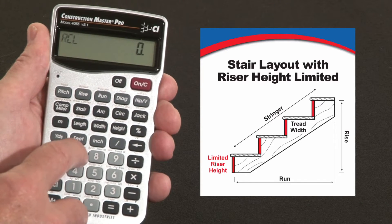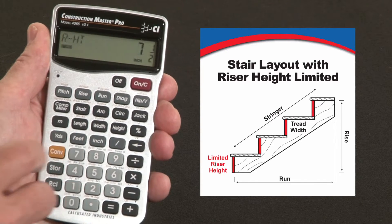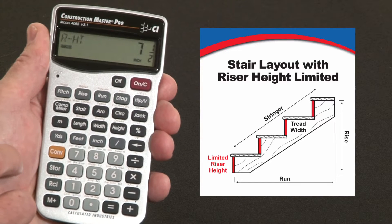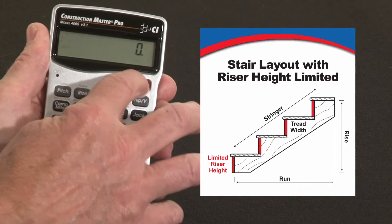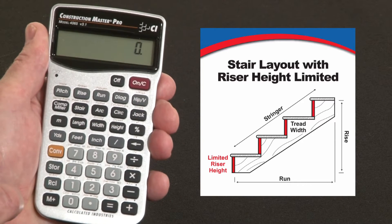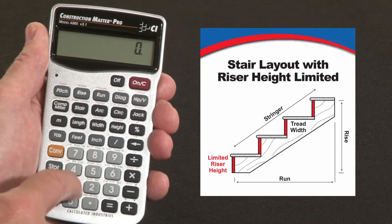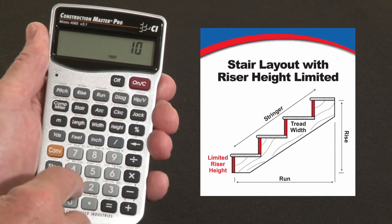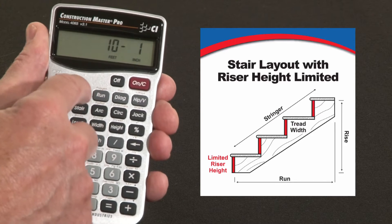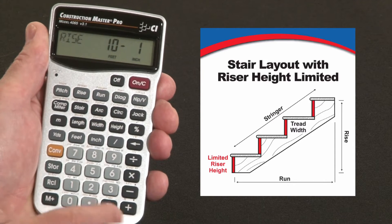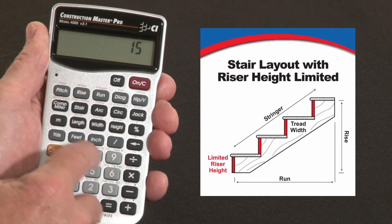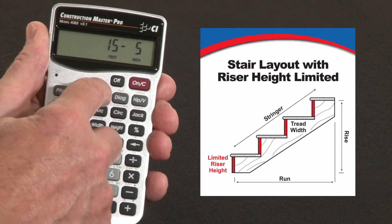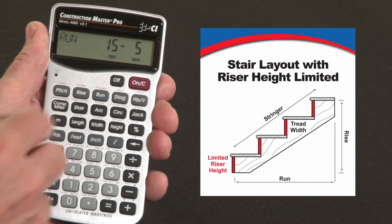First, recall the default riser height is seven and a half inches. We'll leave that in there for this example, but we don't want to exceed that. Let's say that the floor-to-floor rise is ten feet one inch, and we've got a horizontal run of fifteen feet five inches as our constraint horizontally.